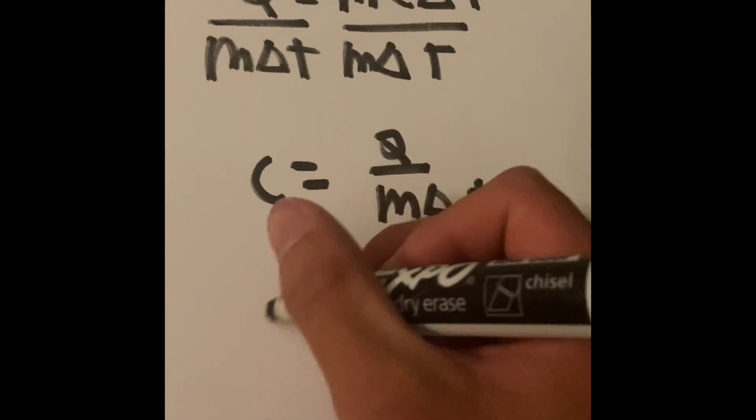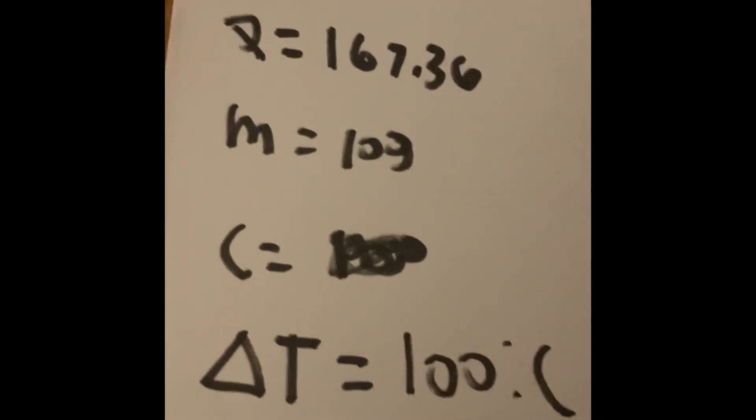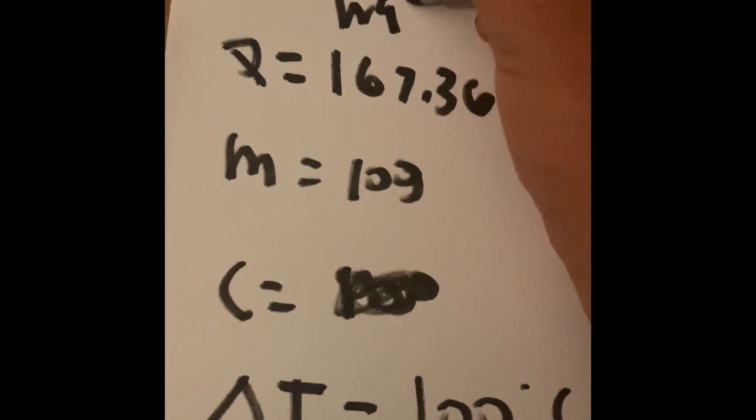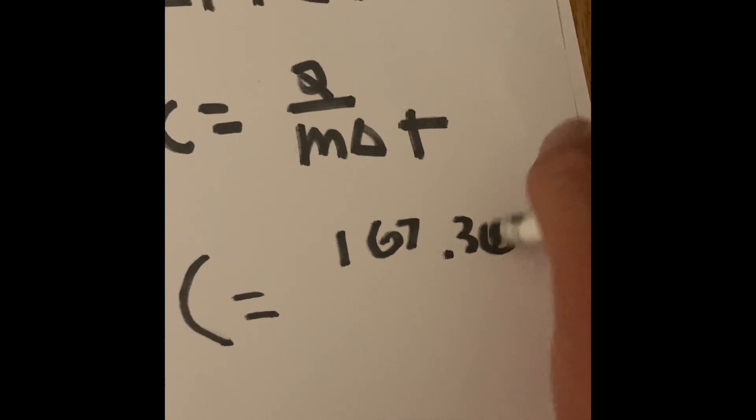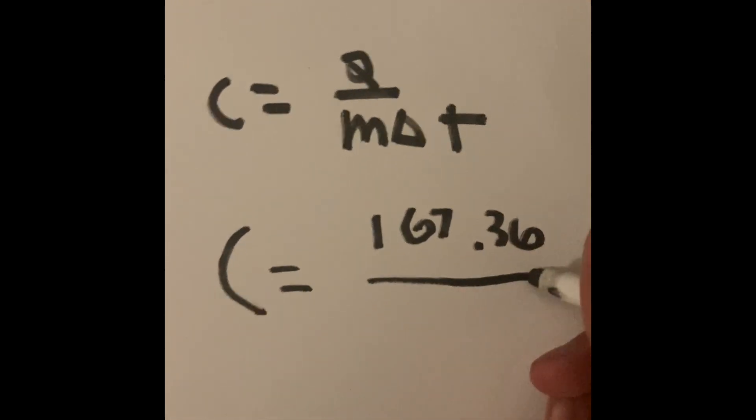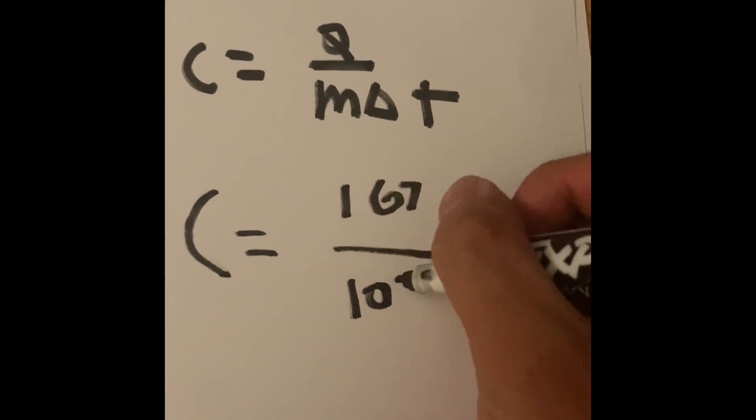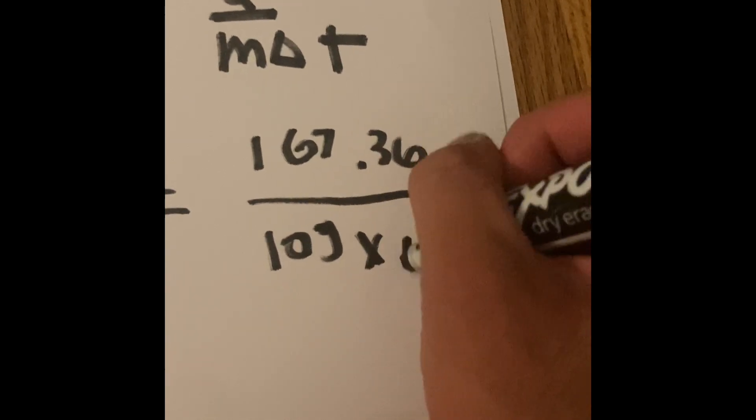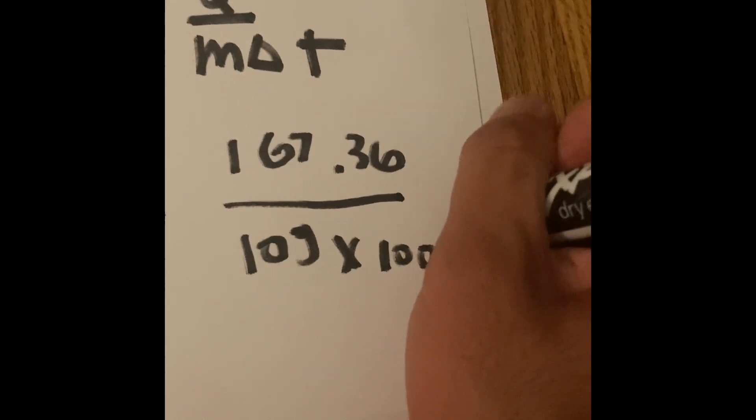So specific heat of the silver equals, from the last problem, we have 167.36. That's the energy of the water in joules. When we toss the cube into the water, we calculate 10 grams, that's the mass of the silver cube. And we have to multiply that by 100 because that was the amount of temperature that made the cube heat up.